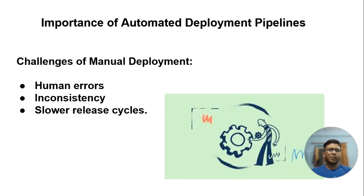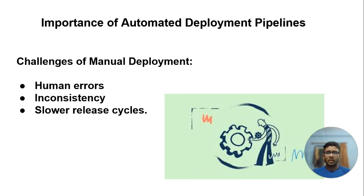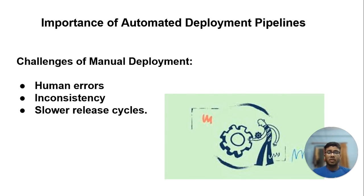Let's see the importance of automated deployment pipelines, but before that, let's look at the challenges faced by manual deployments. First, there are human errors due to human intervention — there are possibilities of errors and inconsistency, so things are not in a proper flow. Third is slow release cycles — it takes a month or more for a new release, a new update, or a new version.